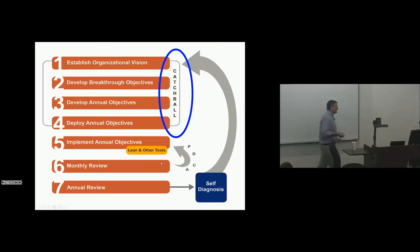Well, what that means is if you look at establishing organization vision, developing breakthrough objectives, developing annual objectives, and then deploying them, those first four steps are all Hoshin. And the last three steps where you implement the objectives and you do your monthly and annual reviews are Kaizen.